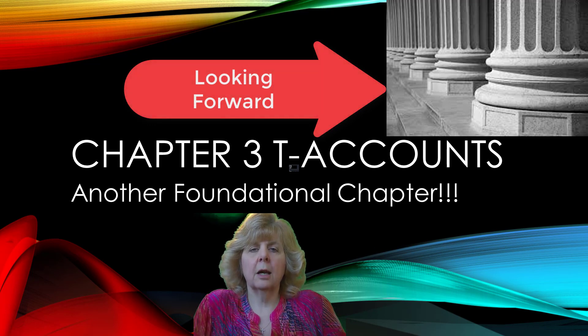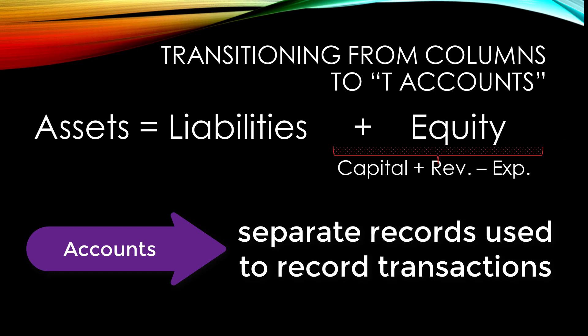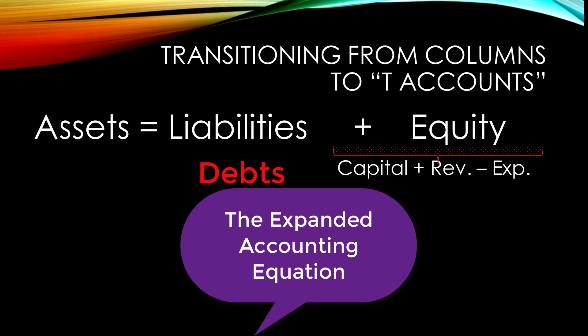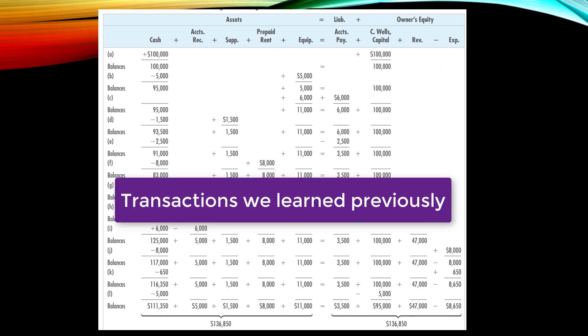We will spend some time talking about T-accounts and the rules of debits and credits. Instead of columns we will be using something called accounts, which are used to help record and classify transactions. For each one of these accounts we'll decide where it falls under the expanded accounting equation. Assets, or things of value, are on the left hand side of the equation, and liabilities or debts that we owe, along with equity representing the owner's worth, fall on the right hand side. The sum of the left hand side has to equal the sum of the right hand side. The columns were fine for learning how the accounting equation works, but again they're messy and not very practical in a business environment.